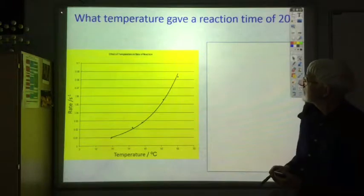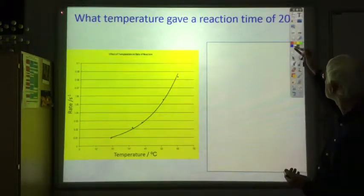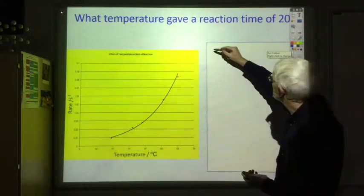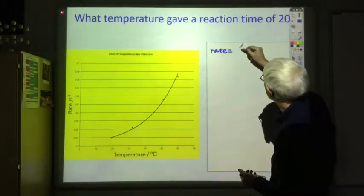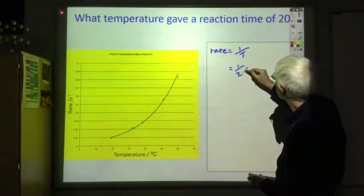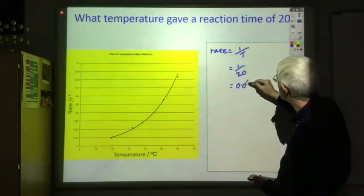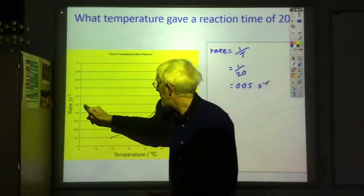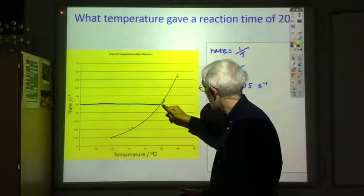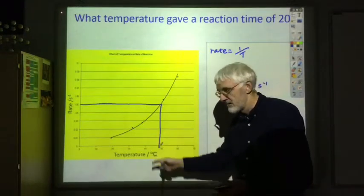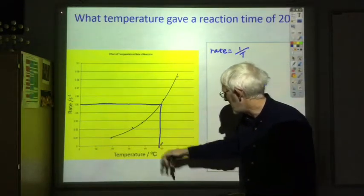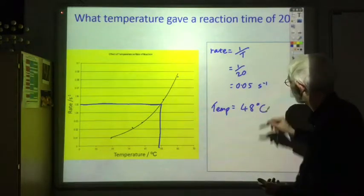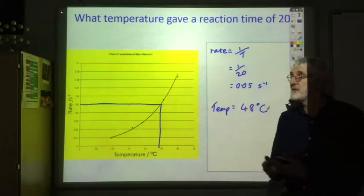Here's another example: what temperature gives a reaction time of 20 seconds? Using rate equals one over time, the rate is one over 20, which equals 0.05 per second. Looking up a rate of 0.05 on the graph, the temperature looks to be roughly 48 degrees C. You should be able to manipulate rate and time using this equation.